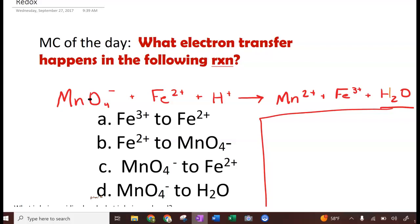And what electron transfer happens? Choice A: Iron 3 ions transfer electrons to iron 2 ions. Iron 2 ions transfer electrons to the permanganate ion. That's choice B. Choice C: The permanganate ion transfers electrons to the iron 2 ion. And the permanganate ion for choice D transfers electrons to water. Put it on pause. Think about it a moment. And I'll talk about it in just a moment.